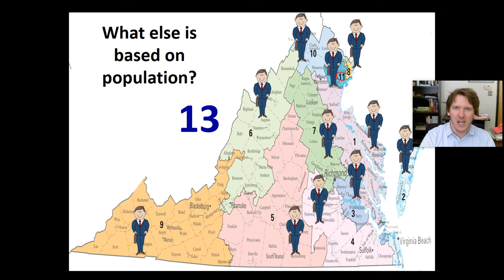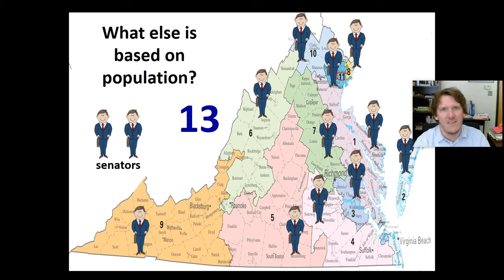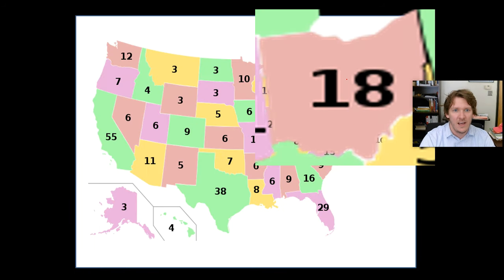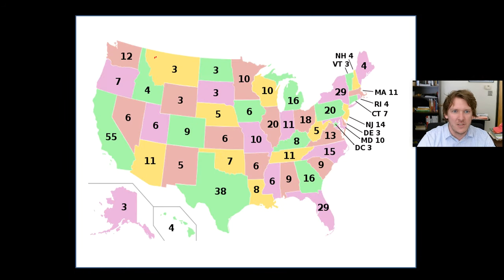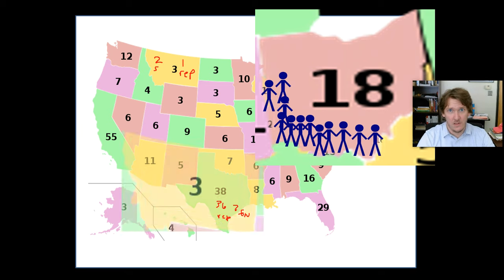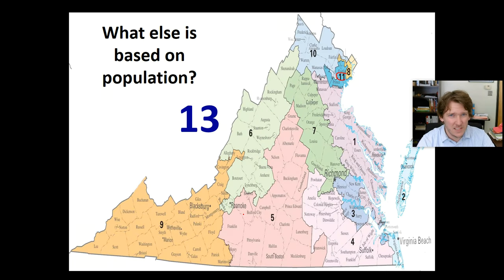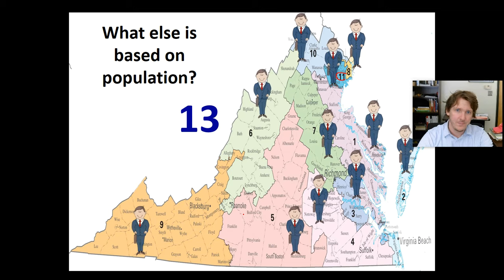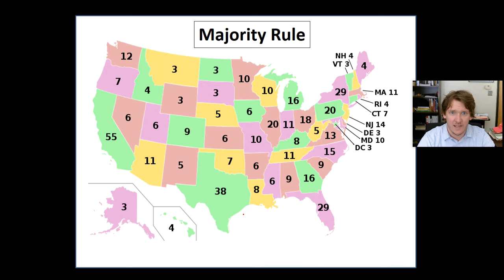Virginia only has 11 representatives, but it gets 13 electoral votes. That's because we throw in the two senators — every state gets two senators. That's why everybody has at least three electoral votes: two senators plus one representative. That's how Montana works. So for Texas, they'd have 36 representatives plus two senators. The Electoral College is based on population, which makes it fair. Some states are worth more because they have more people, and if you have more people, you should have more say in electing the president.